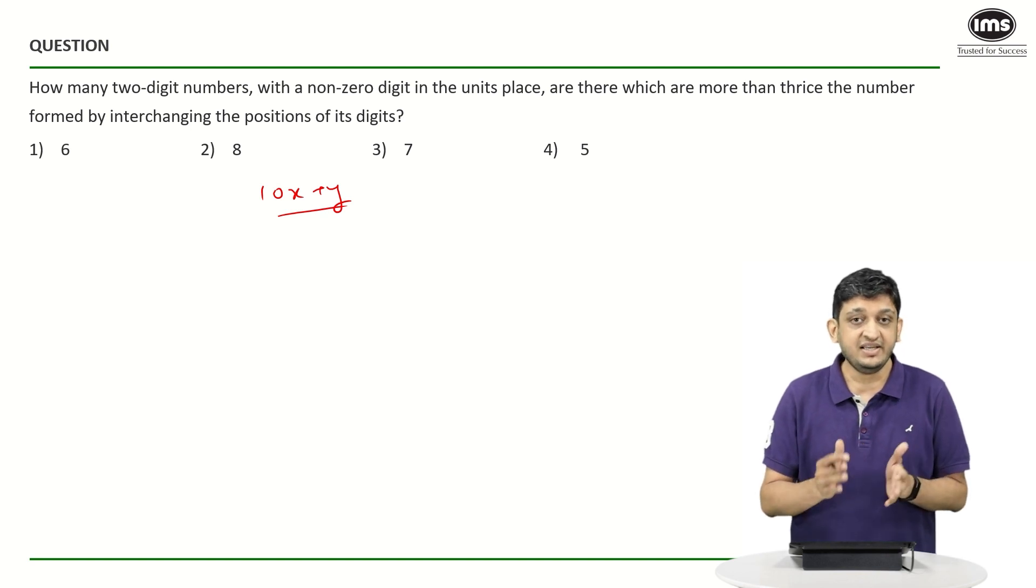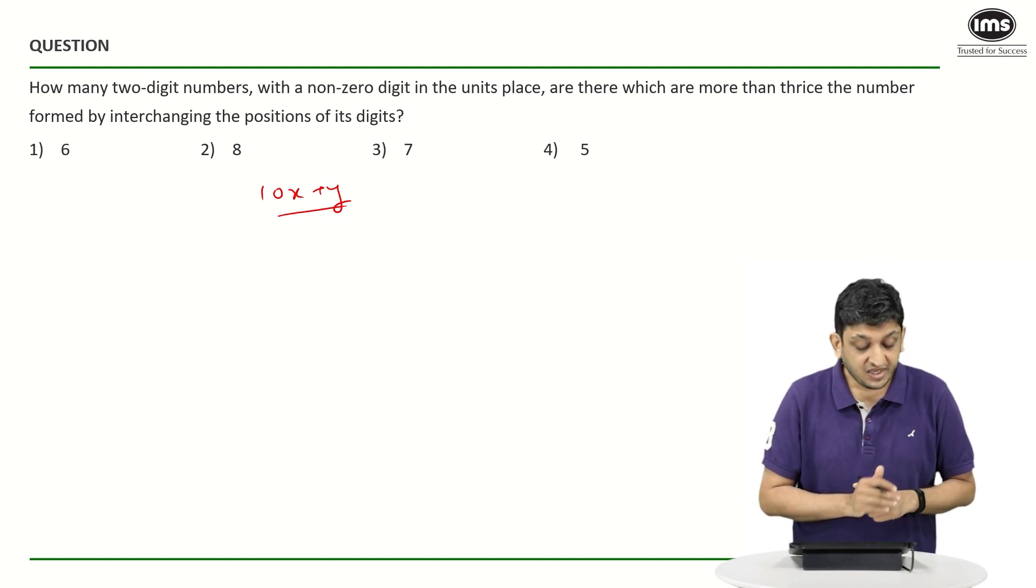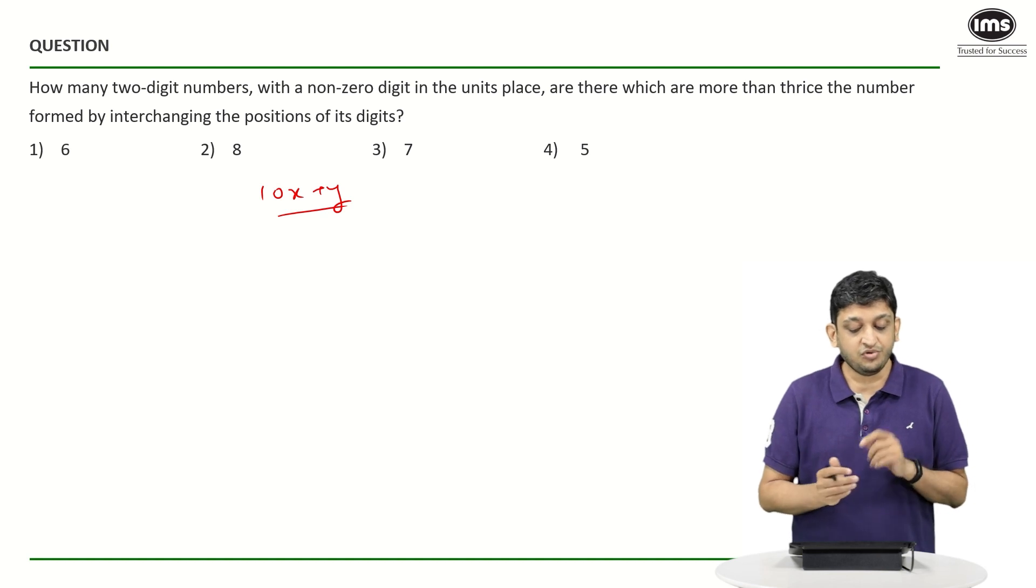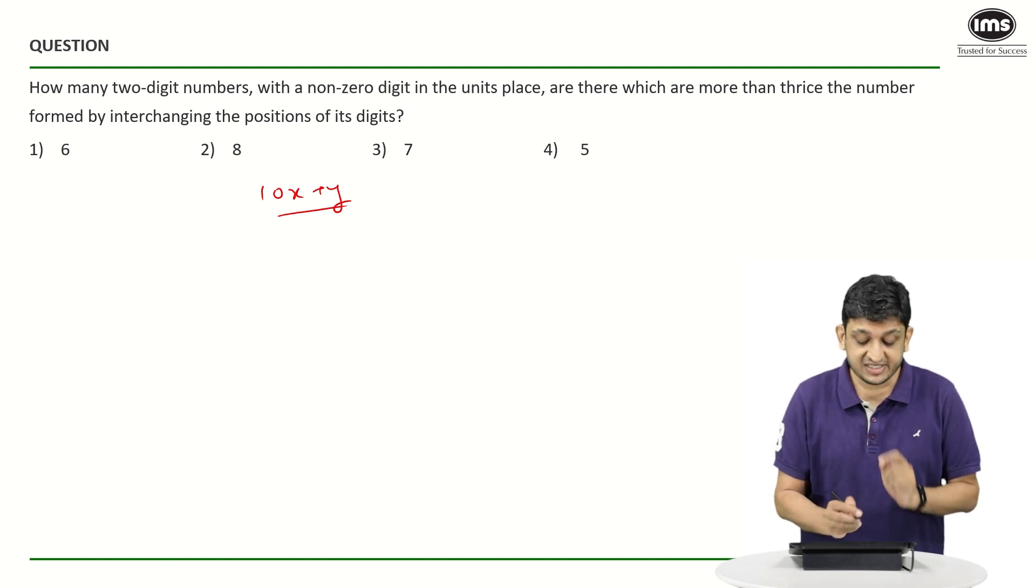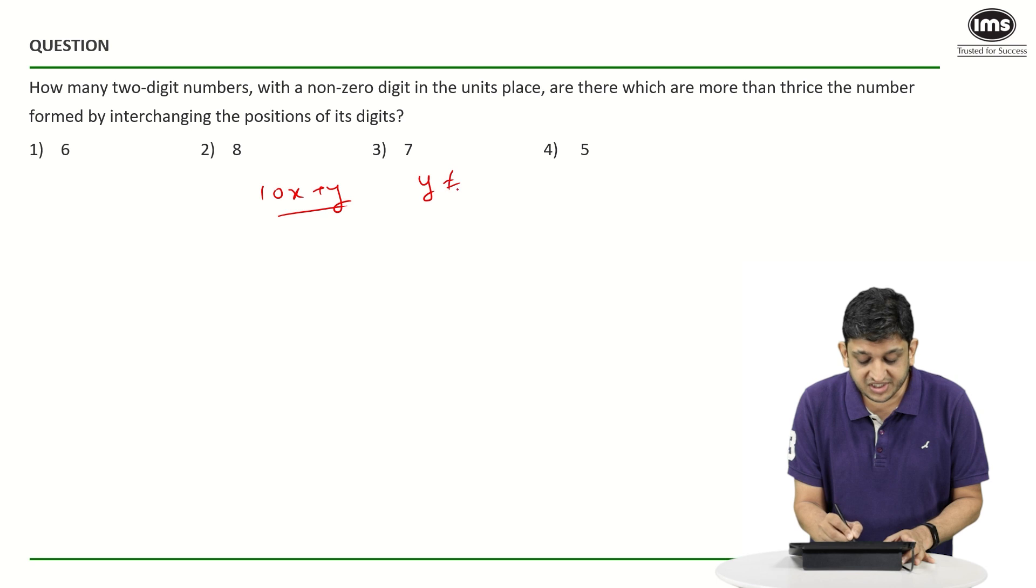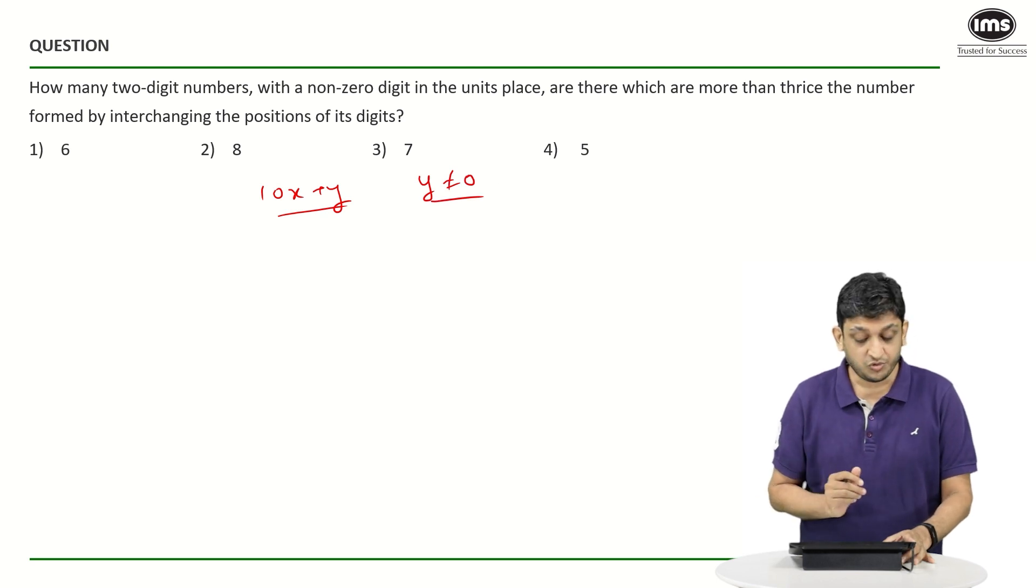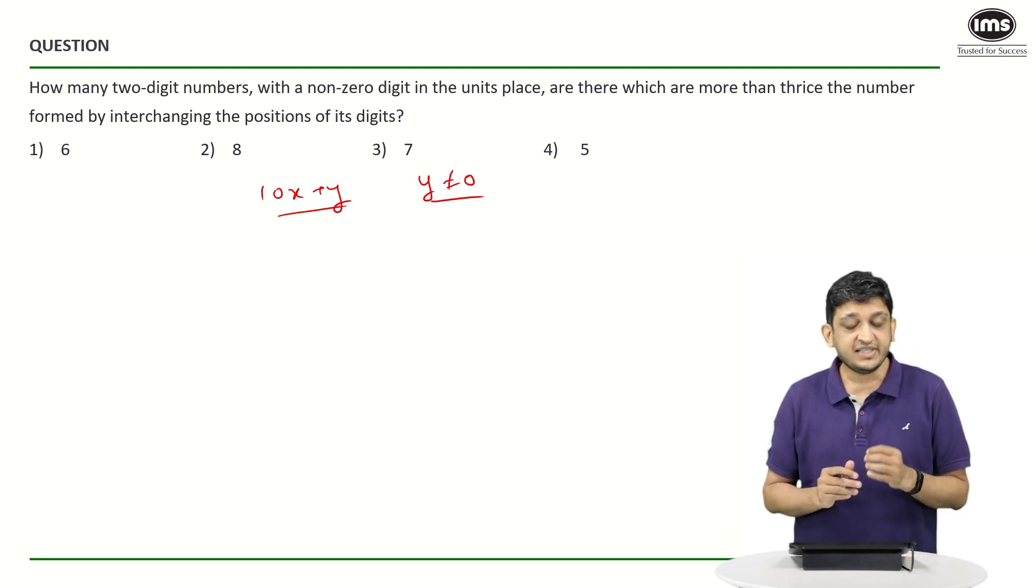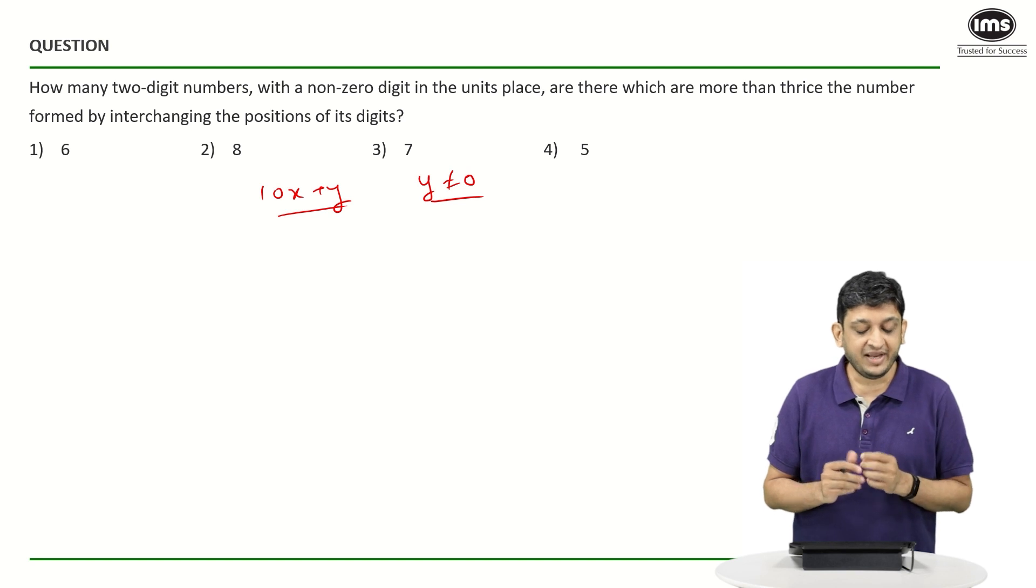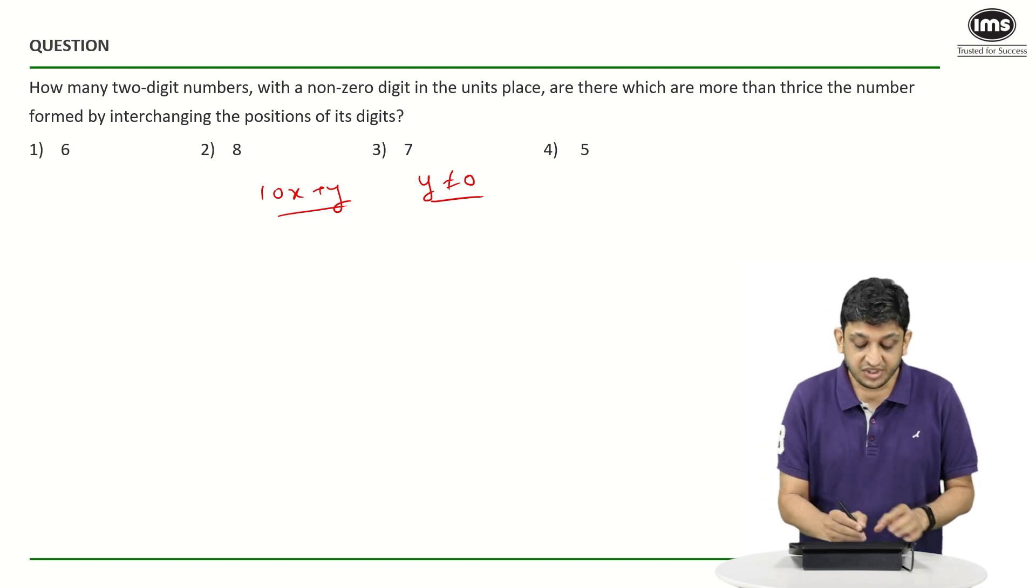Now let's have a look at what is being expected from us in the question. How many two-digit numbers with a non-zero digit in the units place—this basically means that if this is a two-digit number, Y is not equal to 0—are there which are more than thrice the number formed by interchanging the positions of the digits?